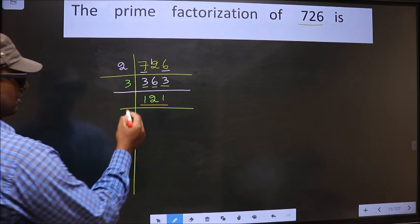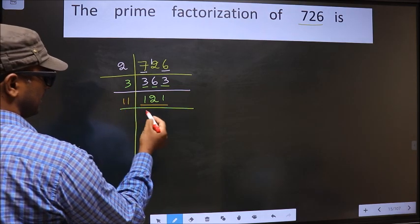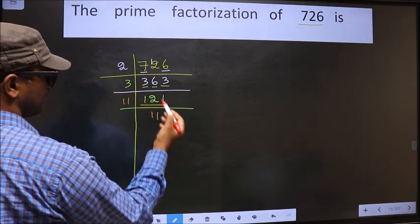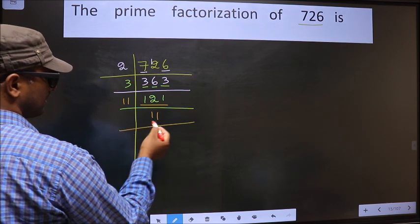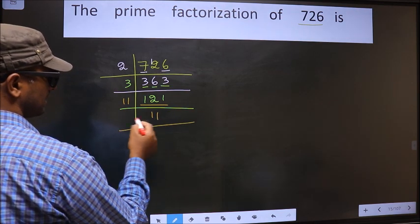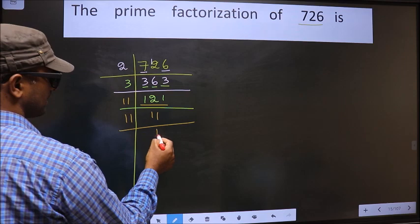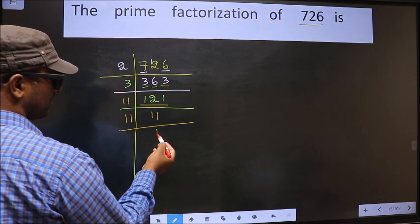So we take 11 here. 11 times 11 is 121. Now we have 11 here. 11 is a prime number, so 11×1=11. We got 11 here.